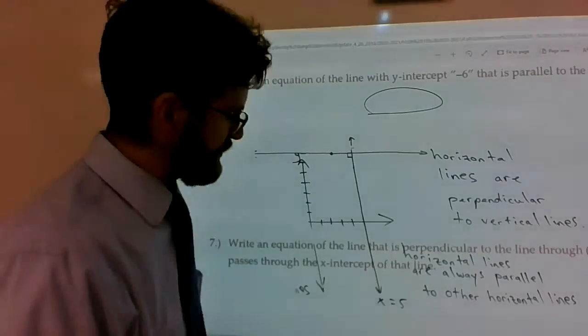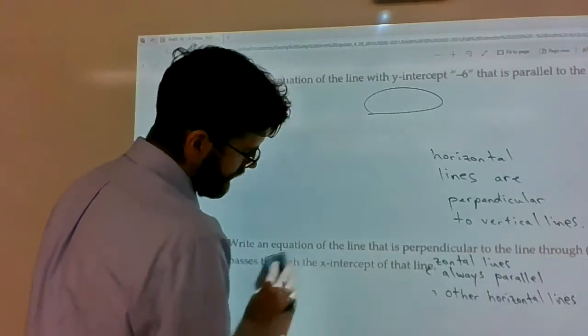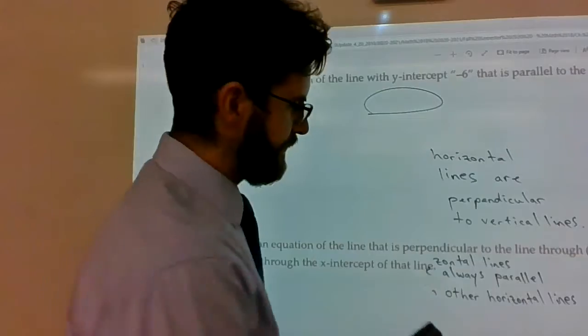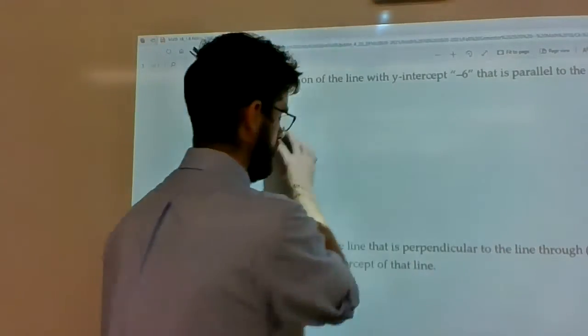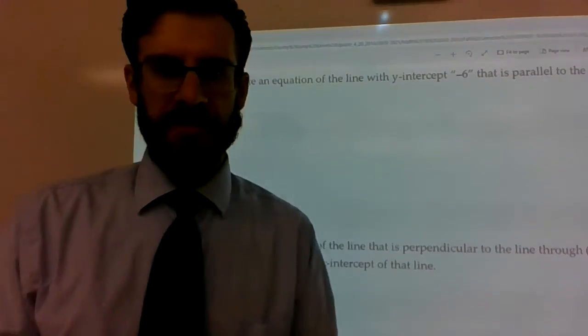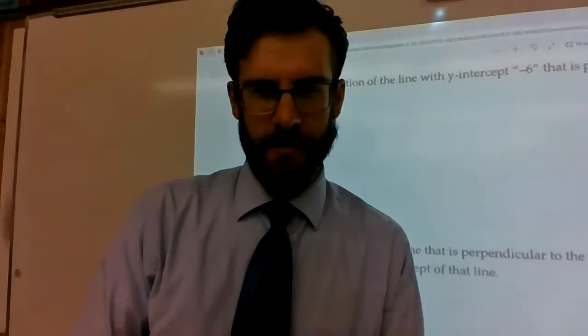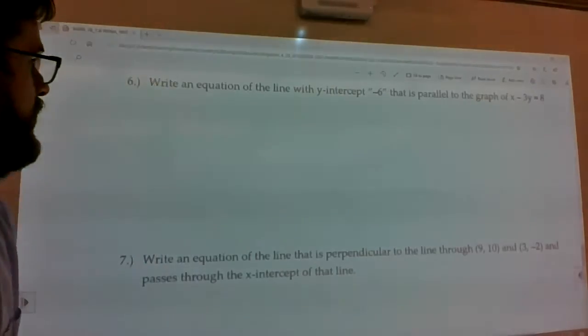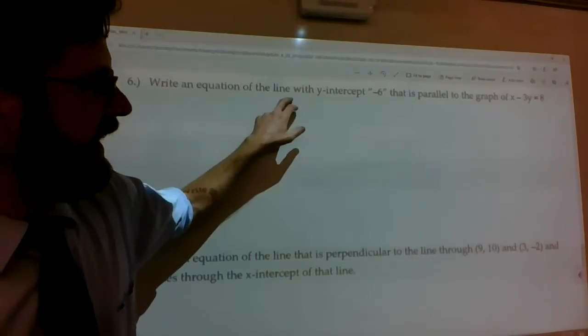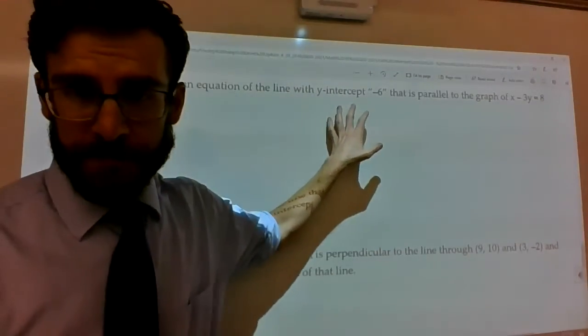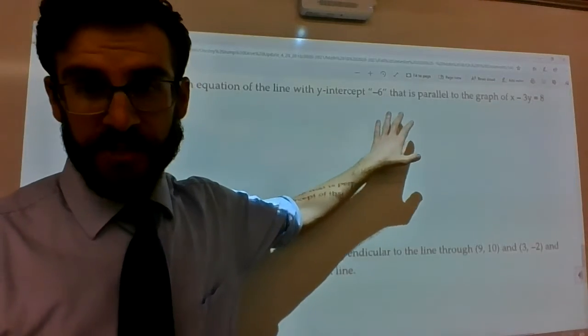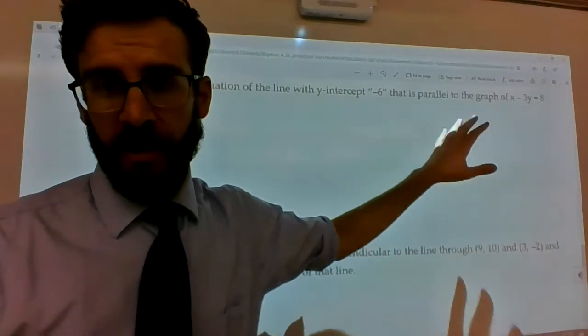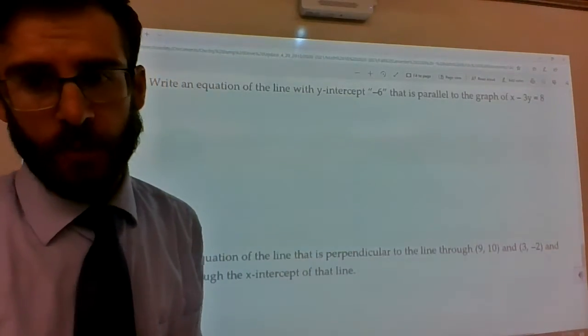All right. I included these two examples as well. They're kind of out of the norm. Let's see how you guys react to it. All right. Got it. It says, write an equation of the line with a y-intercept of negative 6 that's parallel to the graph of x minus 3y equals 8.